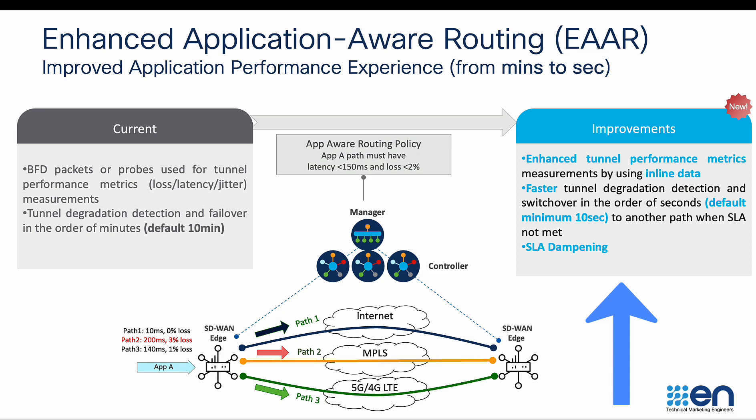We are also adding SLA dampening to the tunnels by default to account for WAN circuit instabilities, by dampening the tunnel before adding it back to the SLA forwarding.